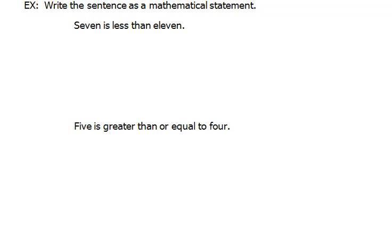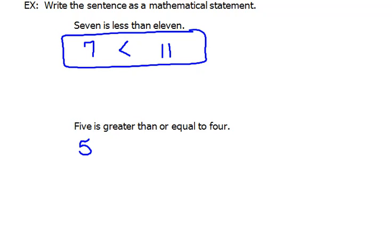Here we're going to be translating. To translate we're going to do it word for word: 7 is less than 11. That's all there is to translating that. And the next one says 5 is greater than or equal to 4.